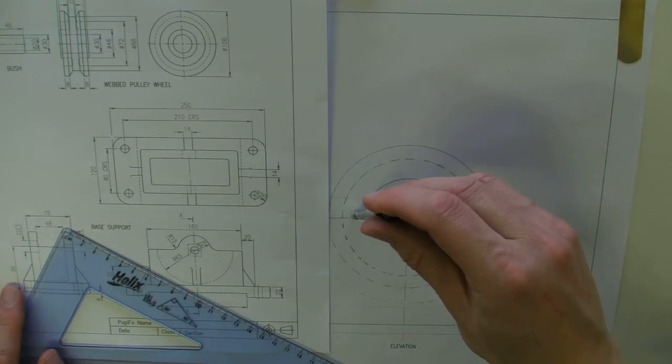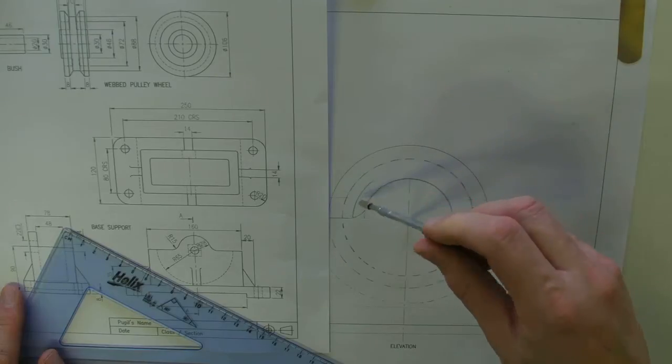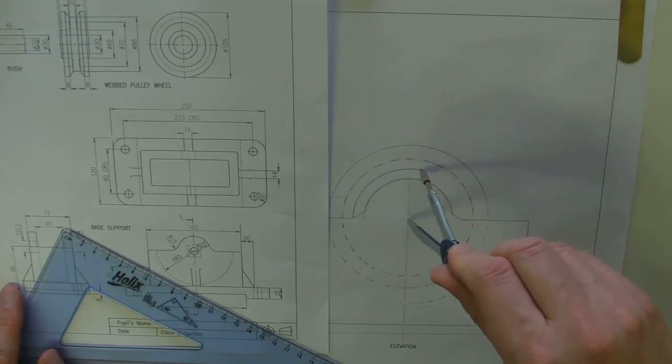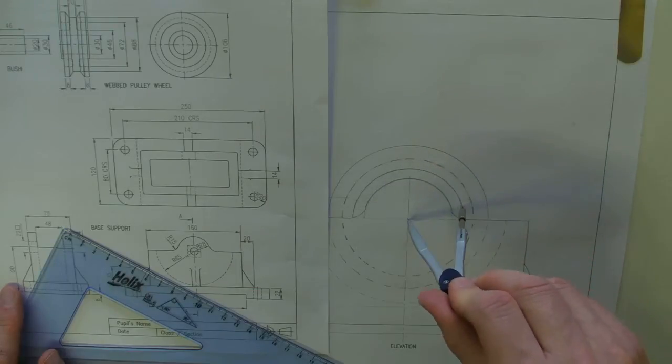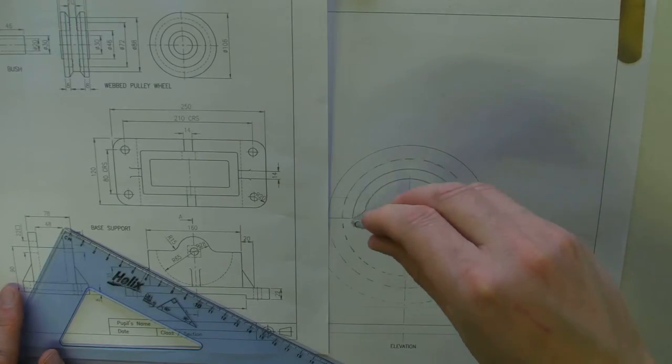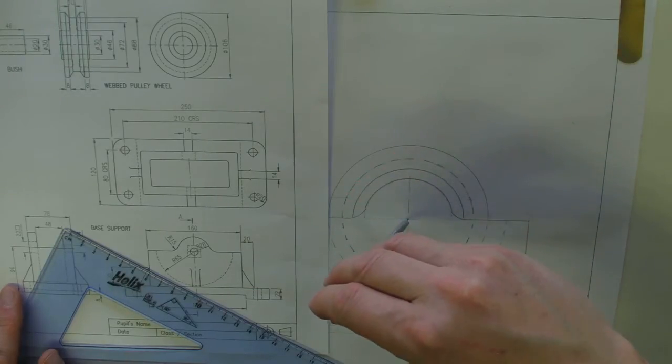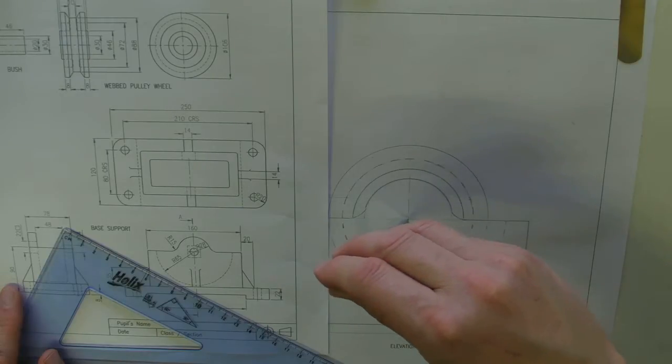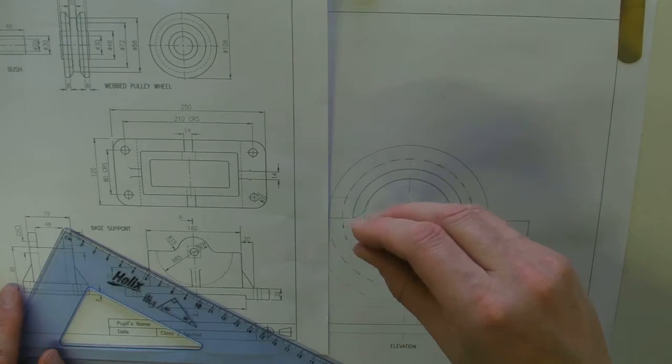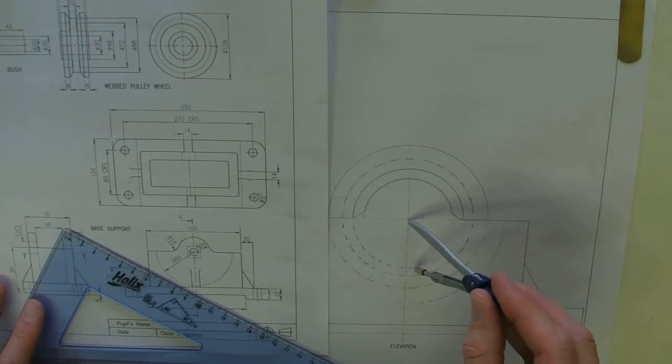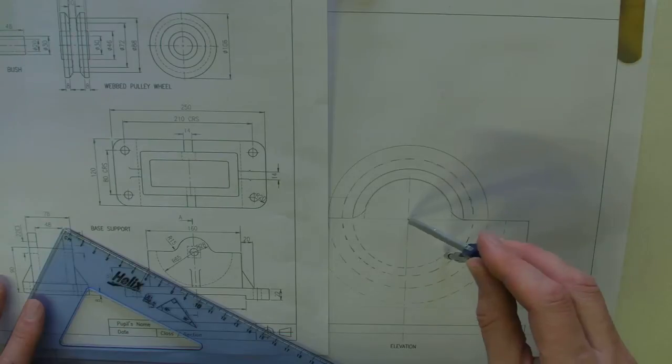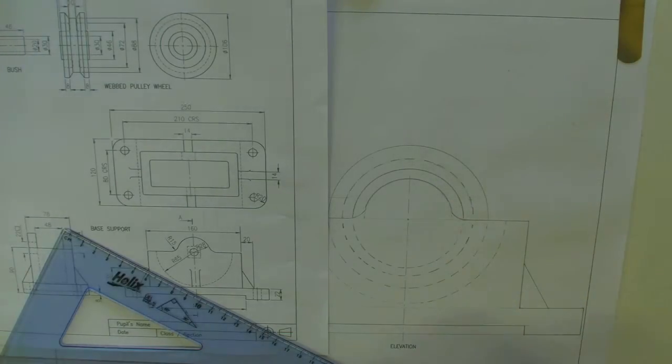So we go solid line, solid all the way. And then it goes hidden detail with several half circles, which are hidden detail here. Okay, so there's that one.